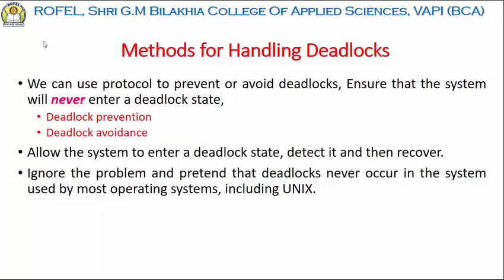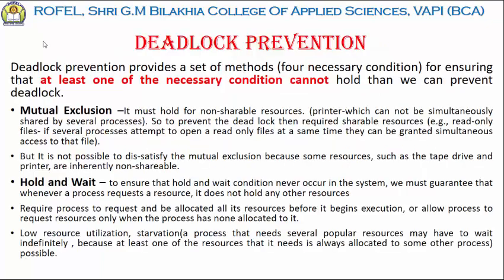Now let us see the methods for handling the deadlock. The system will never enter a deadlock state — for that we have to prevent and avoid the deadlock. First of all we show deadlock prevention. Now how to prevent the deadlock: we already know that there are four different conditions that are usually possible for a deadlock to arise in the system. One is mutual exclusion, another one is hold and wait, then no preemption, and circular wait. In deadlock prevention, we ensure that at least one of the necessary conditions cannot hold, and we prevent the deadlock.